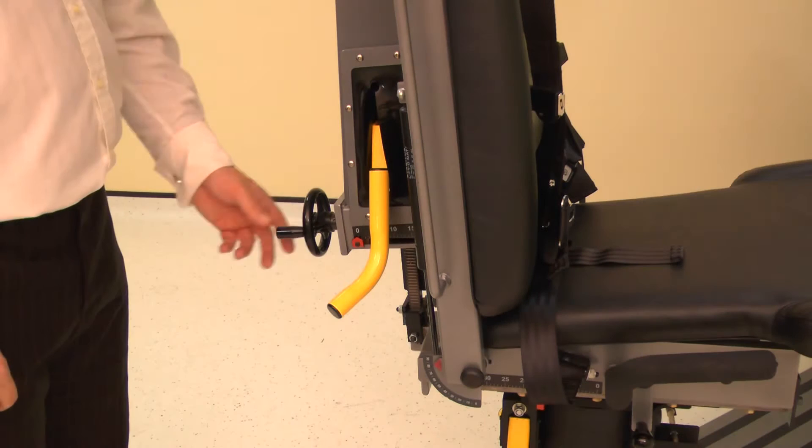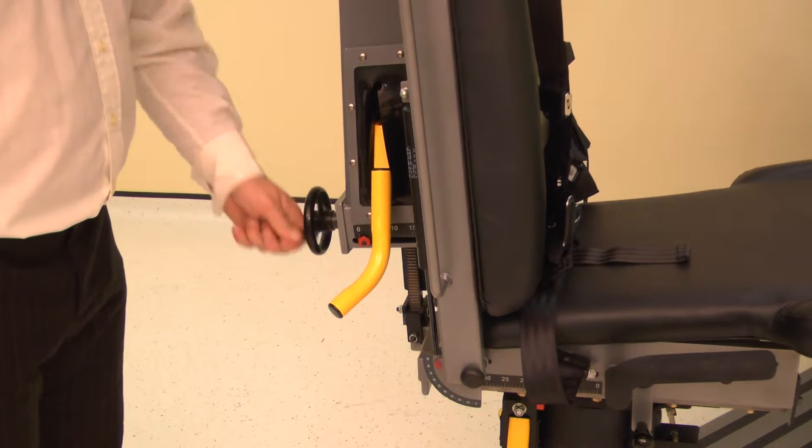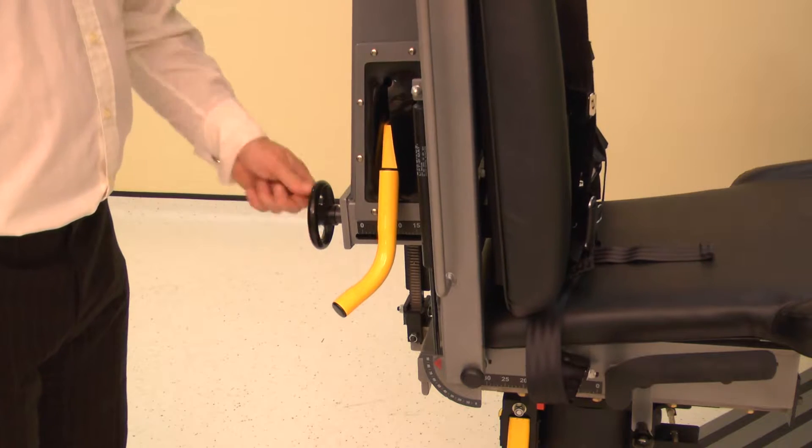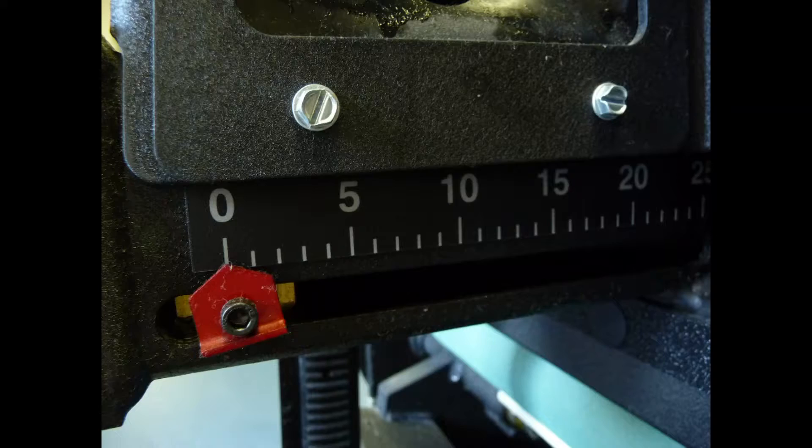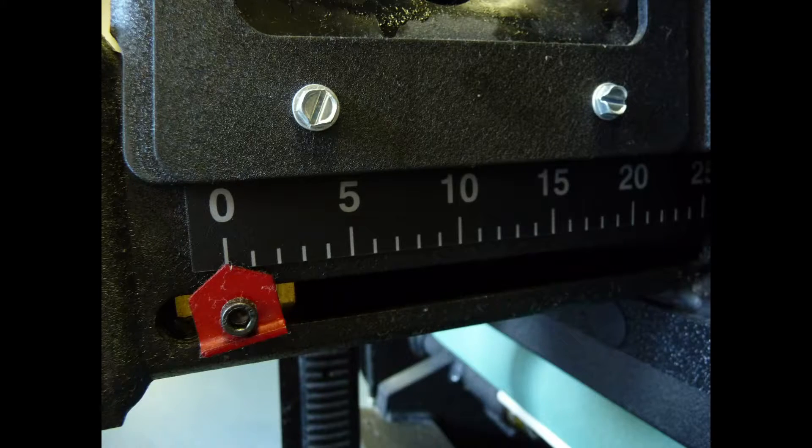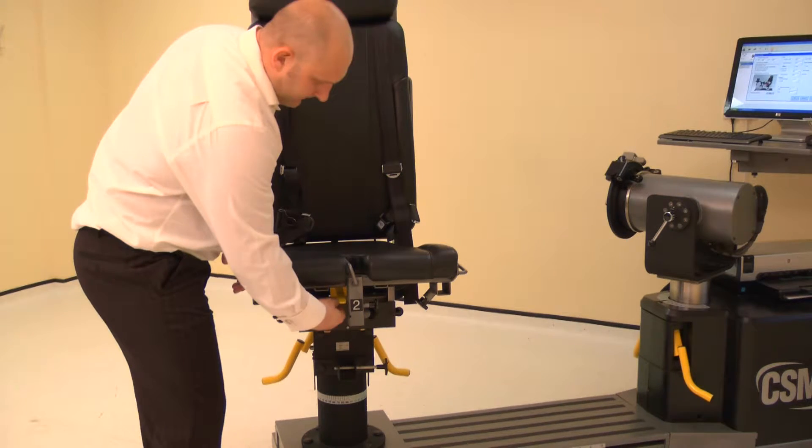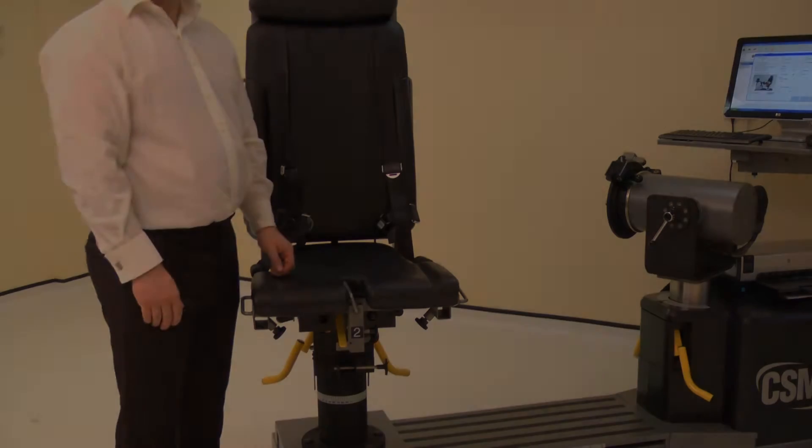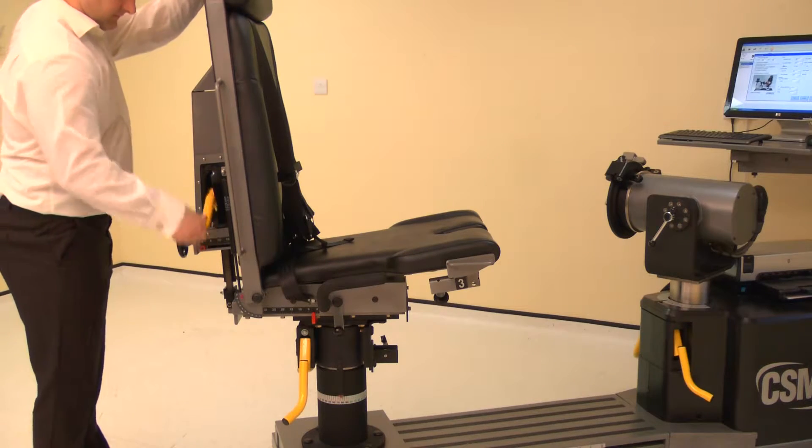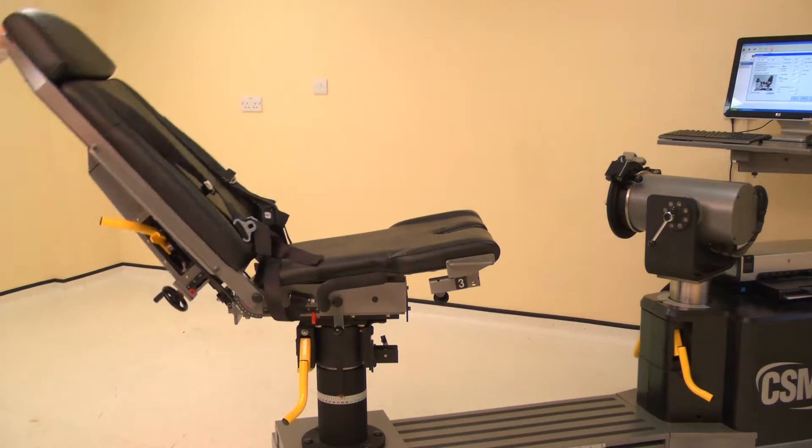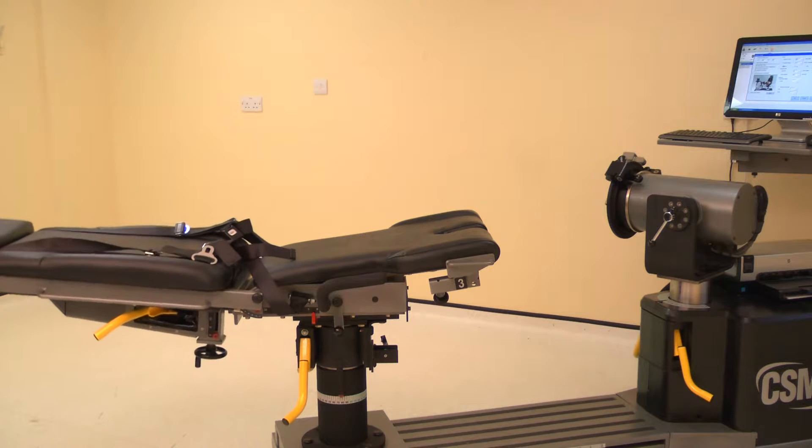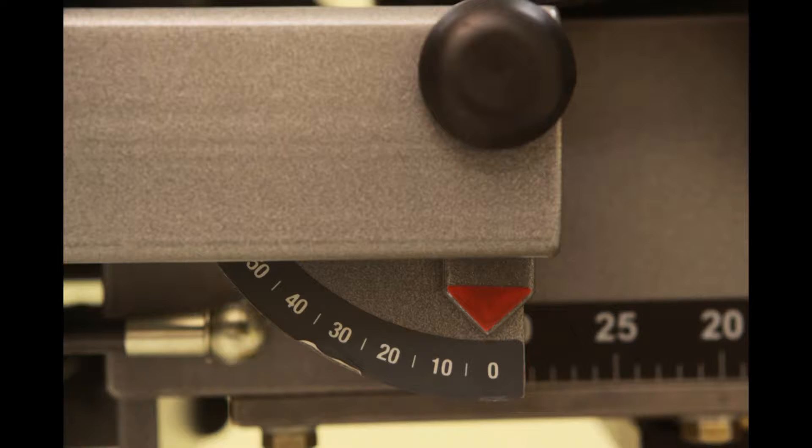Set the chair back translation by winding the handle. Adjust the chair back translation to position 0. Set the seat to the down position by lifting the seat and releasing the lock. To set the chair back angle, lift a locking handle and adjust the chair back. Adjust the chair back angle to 0 degrees.